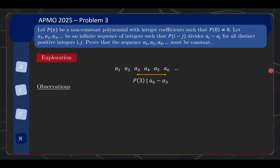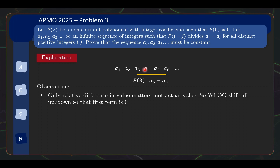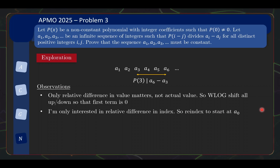Now, right off the bat we are going to make two observations to simplify the problem statement further. Firstly, notice that only the relative difference between values matters, not the absolute value itself. So we can shift the sequence up or down — say plus or minus one to everything — and the property still holds. We can without loss of generality shift the sequence so that the first term equals zero, basically subtracting A1 from the entire sequence. Also, I only care about relative differences in index, so I'm going to re-index the sequence to start at index zero. These two observations will help me get much cleaner notation later on.